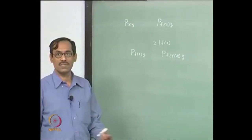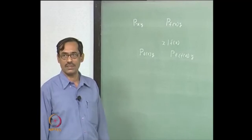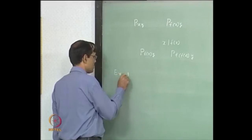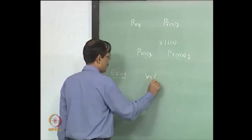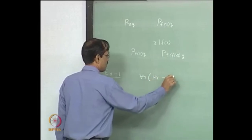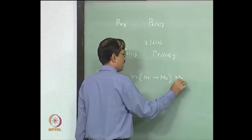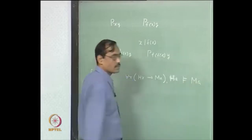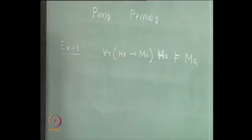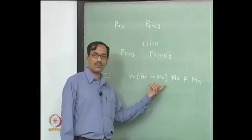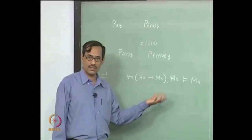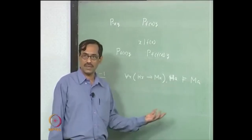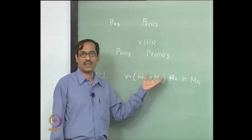Now our aim was to use the most general unifier for resolution. Let us see one example. We will take a very simple example. Suppose we have: for each x, h(x) implies m(x), and m(a) — entails, say, h(a) entails m(a). In resolution, what we will do is try to convert all these things to SCNF, where we will get the disjunctive clauses. Then we should take the resolution on the disjunctive clauses as in propositional logic. But somewhere the more general unifier can be helpful.